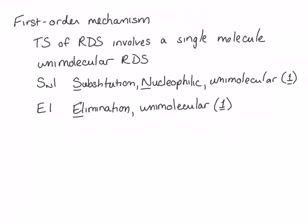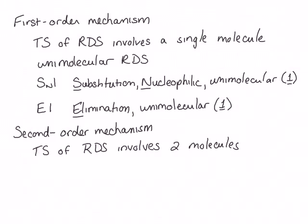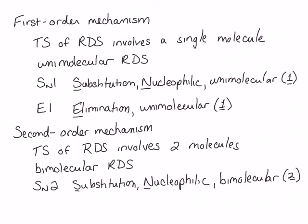Substitution and elimination can occur through a second-order mechanism as well, where the transition state of the rate-determining step involves two molecules — in other words, a bimolecular rate-determining step. A second-order substitution reaction is called SN2, which stands for substitution, nucleophilic, bimolecular, and an elimination reaction that proceeds through a second-order mechanism is called E2, or elimination bimolecular.